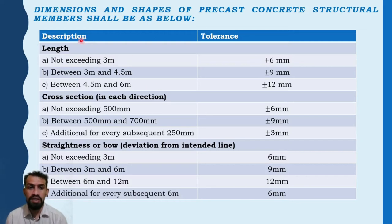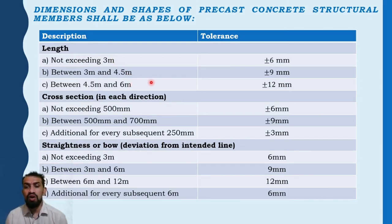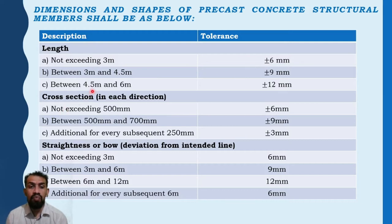Dimensions and shapes of precast concrete structural members shall be as follows. For length tolerances: not exceeding 3 meters — plus or minus 6 mm; between 3 meters and 4.5 meters — plus or minus 9 mm; and between 4.5 meters and 6 meters — plus or minus 12 mm.